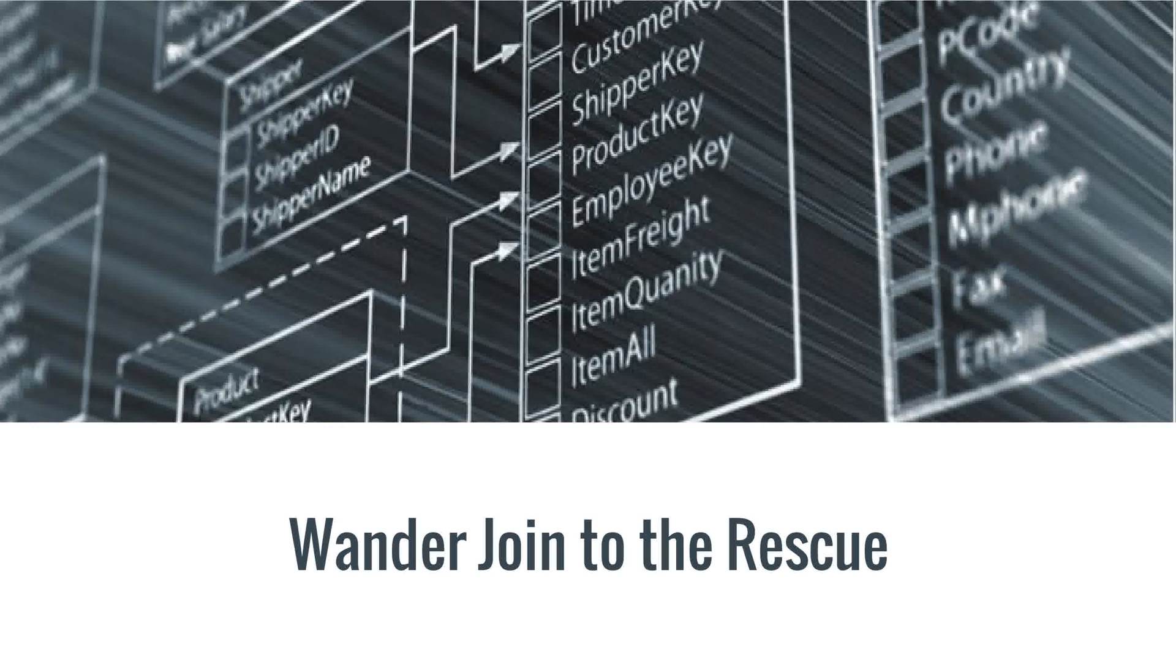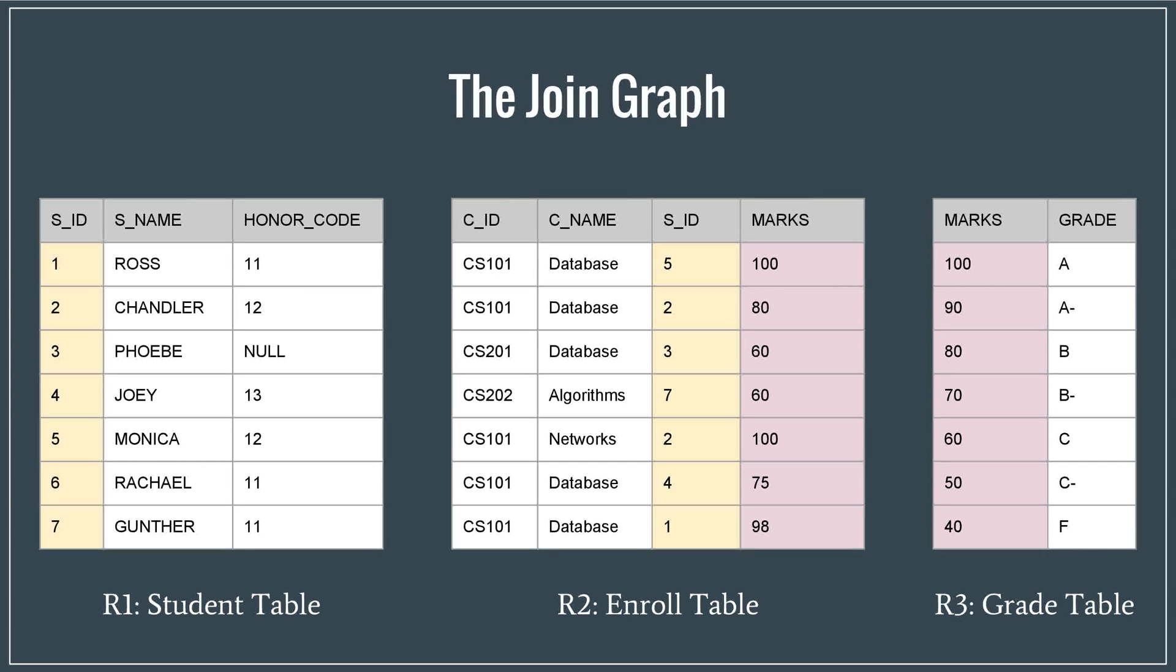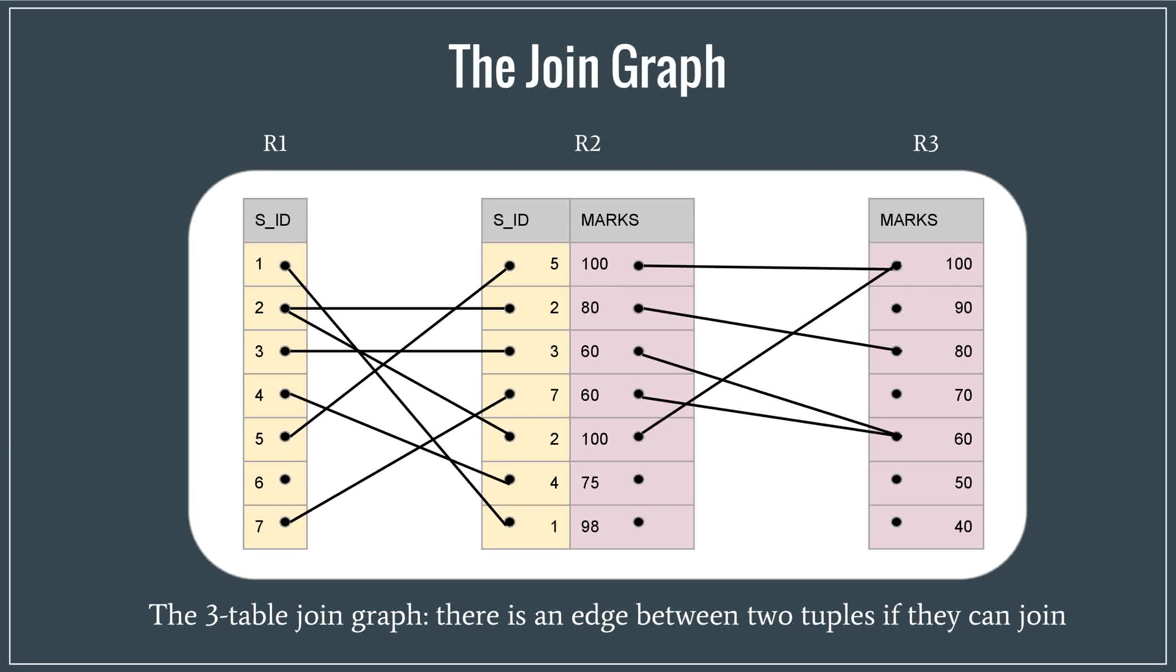WandaJoin overcomes these issues, and it does so by utilizing much less resources in comparison. Let's see how. So firstly, we need to understand what a join graph is. Let's say we want to find the grades of some students by joining the three tables shown here. If we construct an edge between the two tuples that can join, each joint would simply return a path from R1 to R3.